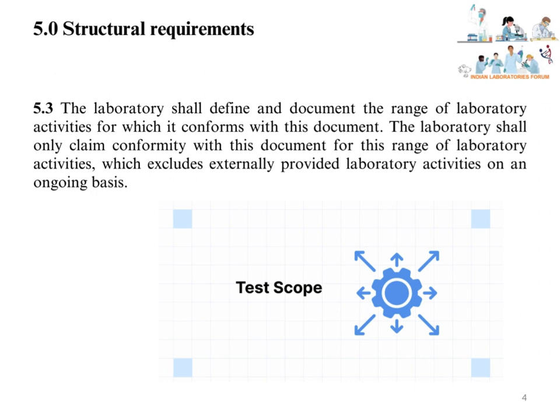The laboratory shall define and document the range of laboratory activities for which it conforms to this document. The laboratory shall only claim conformity with this document for this range of laboratory activities, which excludes externally provided laboratory activities on an ongoing basis. The laboratory should define the scope of testing or calibrations such as product, test parameters, or calibration parameters, methods, range of testing or calibrations such as lower range and higher range. Laboratories should get accreditation for the scope of testing or calibration as per ISO IEC 17025:2017.